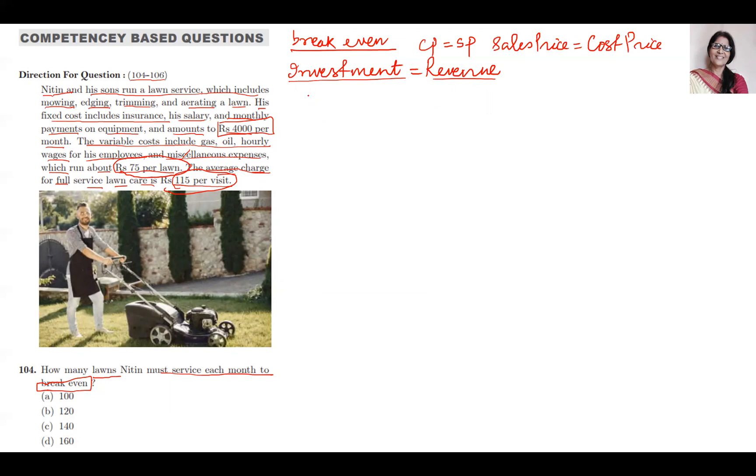So we will make it into an equation. How? The question is how many lawns, so I will take the number of lawns as x. Let y be the total amount. Then what is y? y is his total investment.